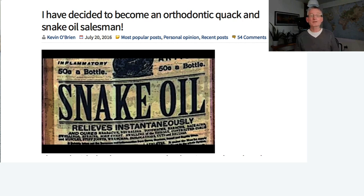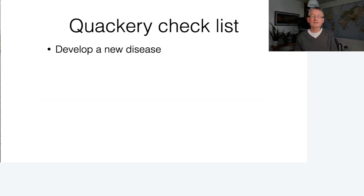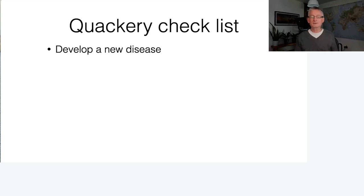I addressed this in a blog post where I decided to become an orthodontic quack and snake oil salesman, and I explored this further with the quackery checklist. If I wanted to make quite a lot of money from a quackery-type treatment, my first step would be to develop a new disease. We can think of examples such as craniofacial dystrophy, and even some aspects of sleep-disordered breathing — a relatively new disorder discovered in the last 15 to 20 years, as if orthodontists have suddenly discovered this problem.